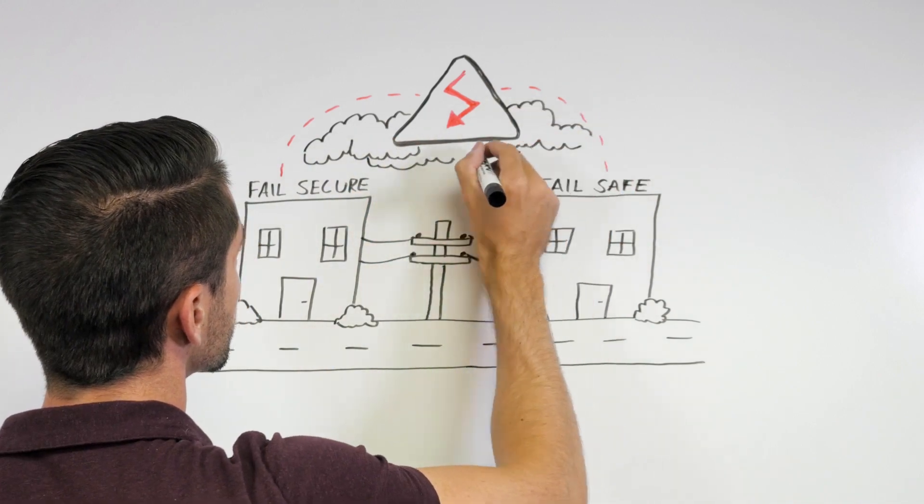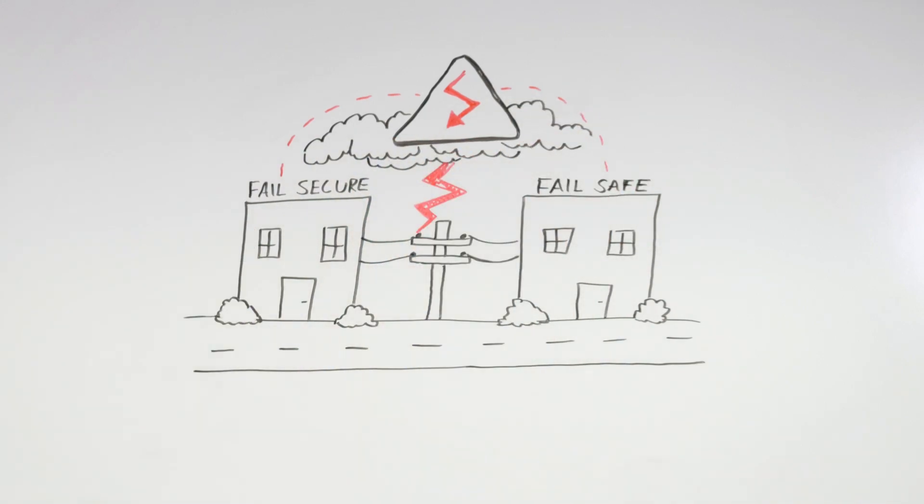Let's start with their definitions. Fail secure products are locked from the outside when they are not getting power. This means when power is cut, say because of severe weather, the fail secure product is locked. This also means to unlock a fail secure product, power must be applied.